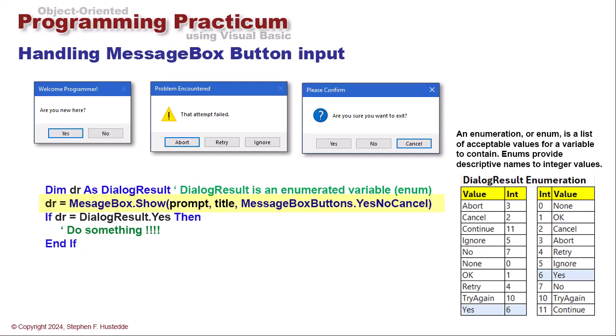Now that message box dot show shows the message box, pauses the execution until the user interacts with it by clicking one of the buttons or closing the message box. Then whatever button is selected returns that value into, in this case, our variable dr, our dialogue result dr.